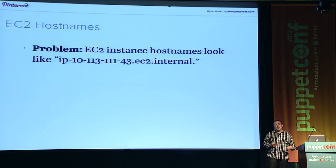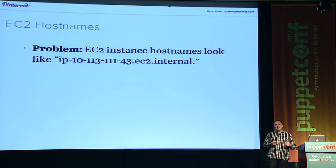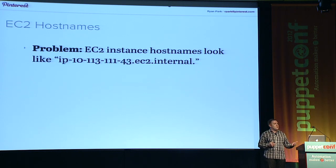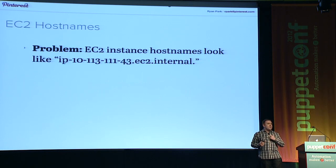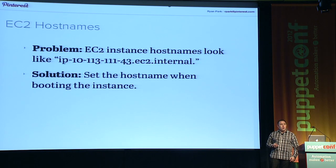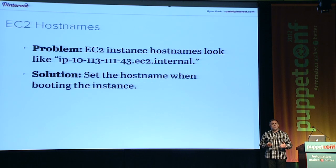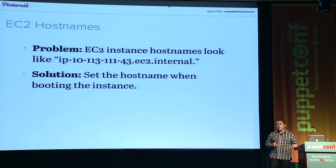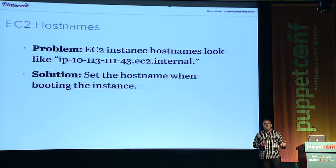When launching EC2 instances, the good news is that Amazon lets you specify a name for each instance. The bad news is that name doesn't correspond to the host name or anything useful on the instance itself. Our server names are like app001 or app002, but the host names always default to something ugly. So we use the RC local script to query the EC2 tags to get the name we've assigned, and then we set the host name based on that tag.